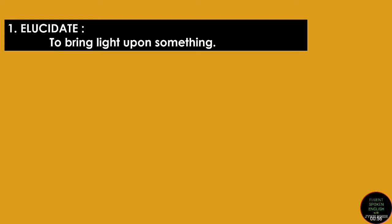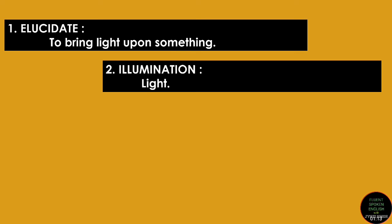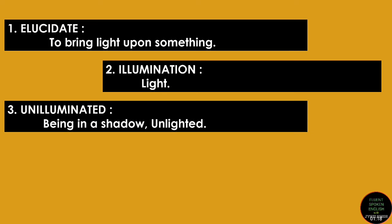The first word is 'elucidate.' It means to bring light upon something, to explain something, to bring it into some light. Next is 'illumination.' Illumination is always connected to light — something very bright. 'Unilluminated' means which is not lighted, which is in a shadow or unlighted.